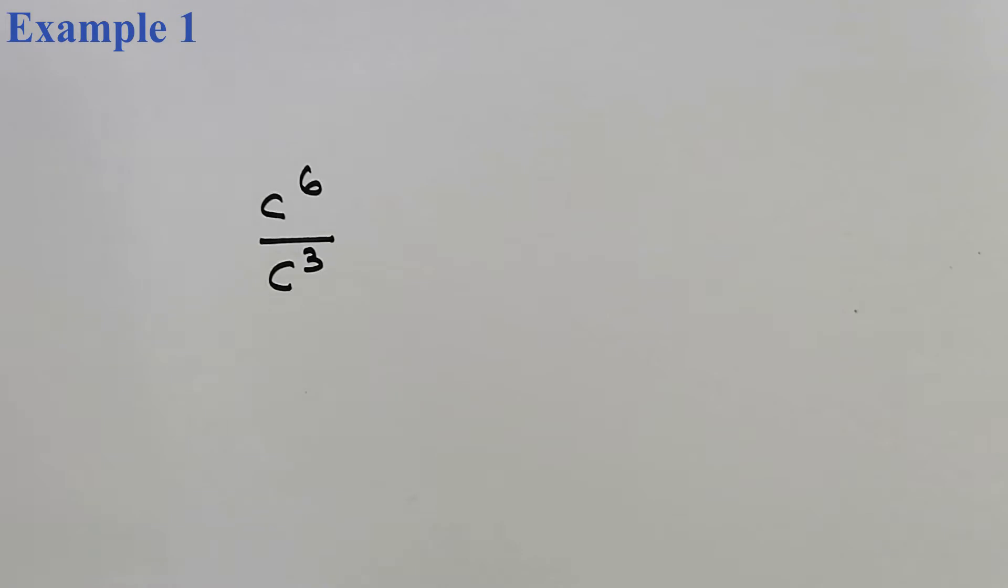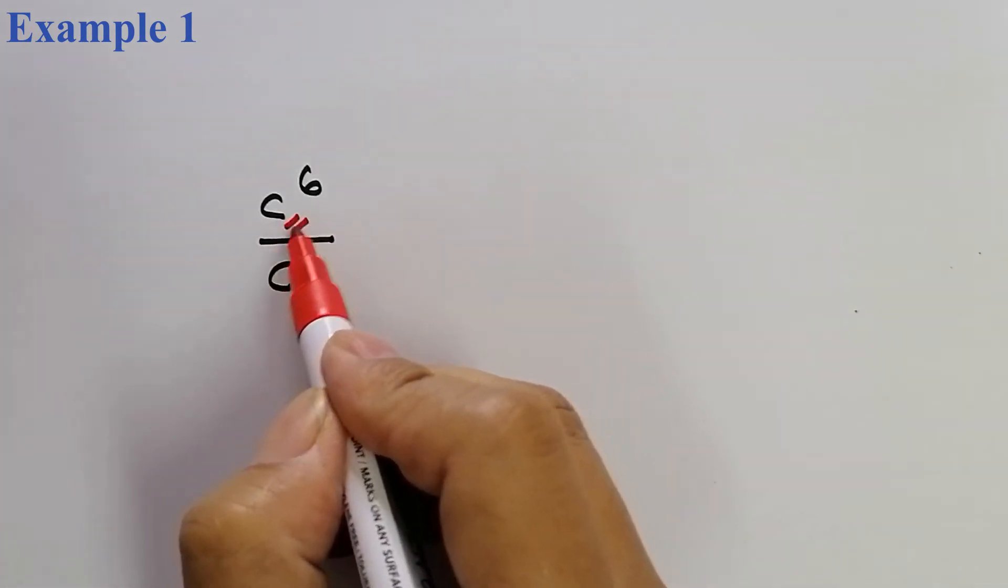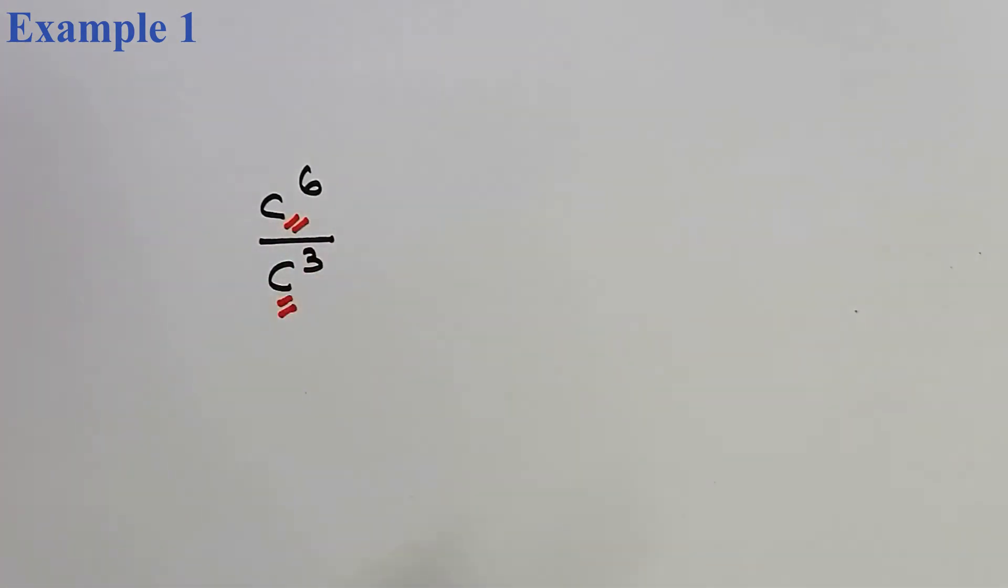Untuk node kedua, untuk indices, ini ada contoh yang pertama yang akan kita perhatikan. C power of 6 divided by C power of 3. Terlebih dahulu kita tengok ada jump phase untuk soalan ini sama. Yes, phase dia adalah sama. Phase dia adalah phase C.